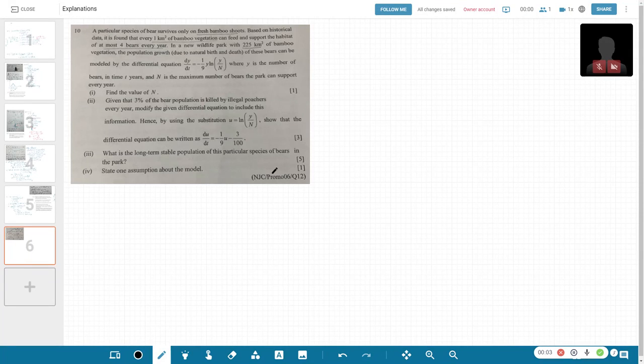This is a differential equation question, NJC Promo 2006. A particular species of bears survive only on fresh bamboo shoots. Based on historical data, 1 km² can feed at most 4 bears, and in this park there are 225 km².